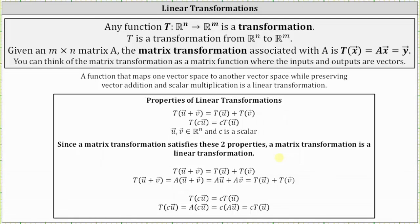Let's prove these two properties for a matrix transformation. First, we need to show that t of the sum of u and v equals t of u plus t of v. T of the sum of u and v equals matrix A times the sum of u and v, which equals A times u plus A times v. Since A times u is t of u and A times v is t of v, this gives us what we wanted to show. For the second property, t of c times u equals matrix A times the product of c and u. Using the commutative and associative properties of multiplication, we can write this as c times the product of A and u, which gives us c times t of u.